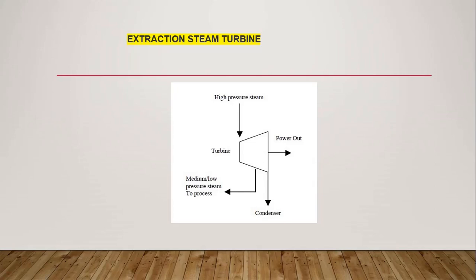In industries we use two types of steam turbines — two categories. One is the extraction steam turbine, and the other is the non-condensing steam turbine, also known as the back pressure steam turbine. Both of these steam turbines have their own operating schemes and benefits.